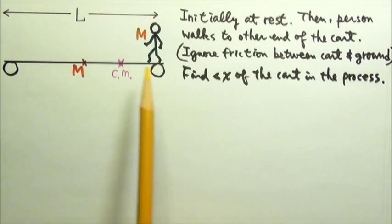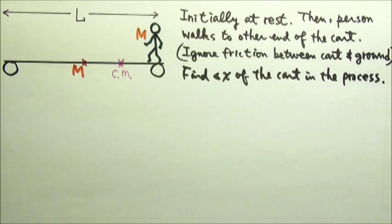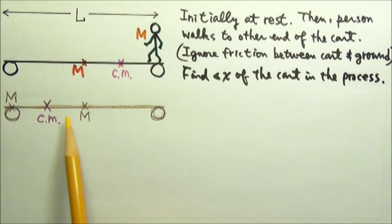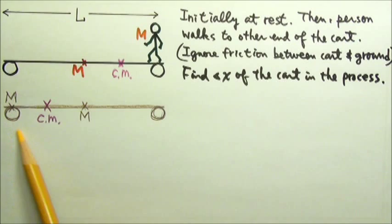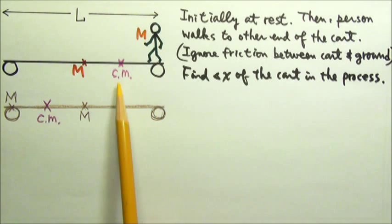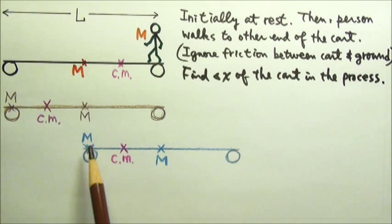When the person is at the other end of the cart, the picture looks like the original one flipped over — person on this side, cart shifted over, with the system center of mass at the same fixed point. Since the center of mass must stay at rest, the cart must shift so that the new configuration's center of mass lines up with the original position. Therefore, the displacement of the cart must be half L.